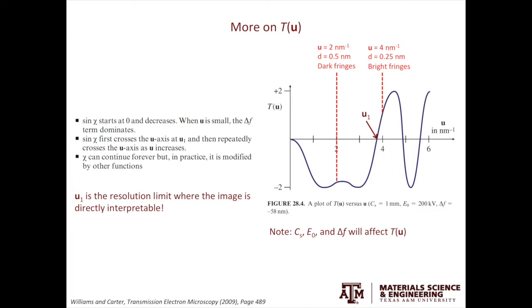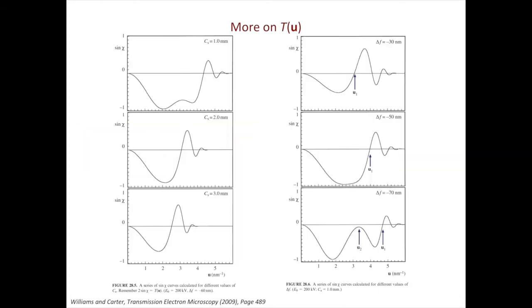If you read the legend of the figure, it specified the spherical aberration coefficient, the acceleration voltage of the TEM and the defocus value. We cannot easily change the acceleration voltage of the TEM. So next, we'll look at the effect of the spherical aberration coefficient and the defocus value on T(u). The figure on the left shows the effect of Cs, the aberration coefficient, on T(u). As Cs increases, the first crossover, u1 decreases. That tells us as Cs increases, there is a degradation of the resolution for the microscope.